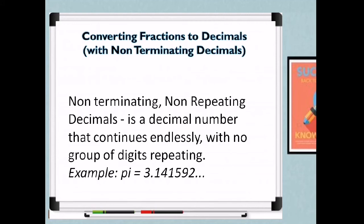There are also non-terminating non-repeating decimals — these continue endlessly with no group of digits repeating. One of the best examples is pi, whose value is 3.141592... and so on. It continues infinitely but the digits do not repeat and follow no pattern.